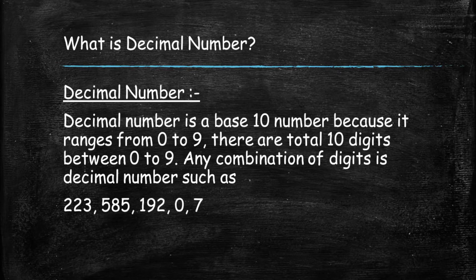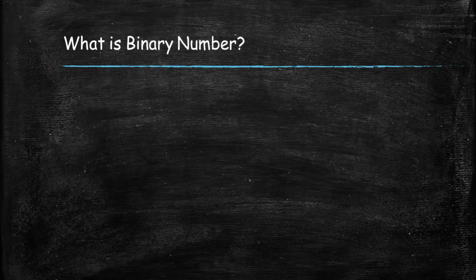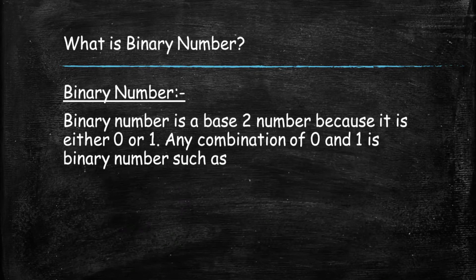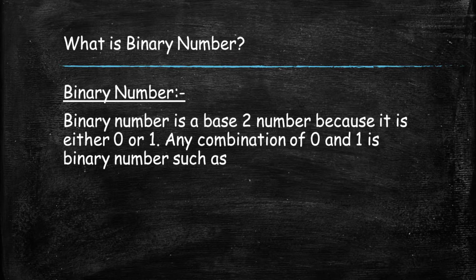Such as 22358519207. And what is a binary number? A binary number is a base 2 number because it is either 0 or 1. Any combination of zeros and ones is a binary number, such as 1 0 0 1 1 0 1 1.